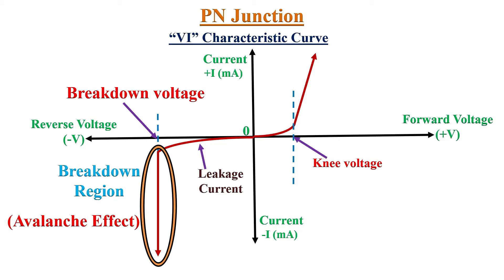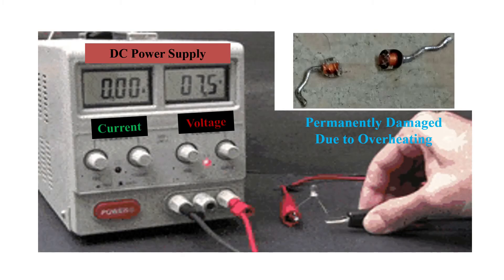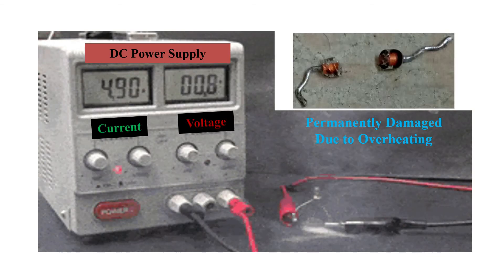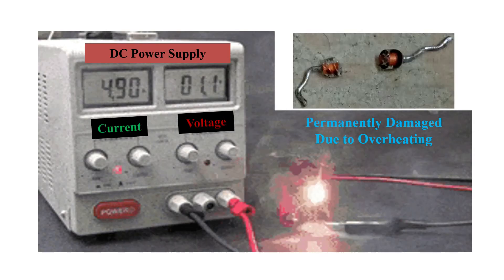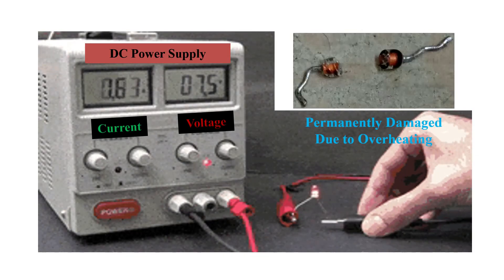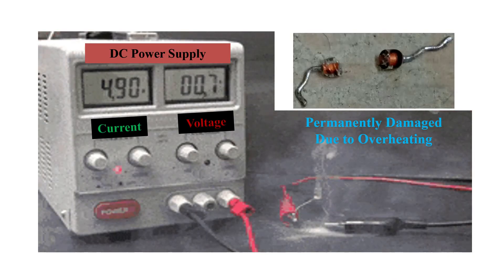For a normal diode, this region of operation should be avoided. When the applied voltage exceeds the breakdown voltage, the diode starts conducting in reverse direction and a very high current flows through it. If there is no series current-limiting resistor connected with the diode, then due to very high current flow and high power dissipation the diode gets overheated and permanently gets damaged.